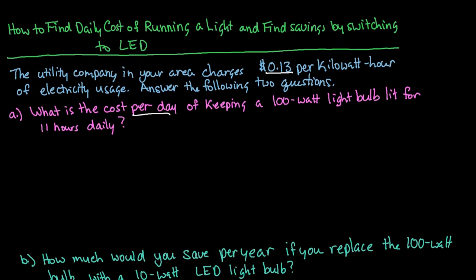So when we're doing conversions it's always a good idea to just figure out what we're looking for. So our answer we want to have it in cost per day. So when we do that we need to look at the information that we already have. So we know that we are charged 13 cents per kilowatt hours. So right now that is the units that we are in. We also know that we have a 100 watt bulb and that it runs for 11 hours per day.